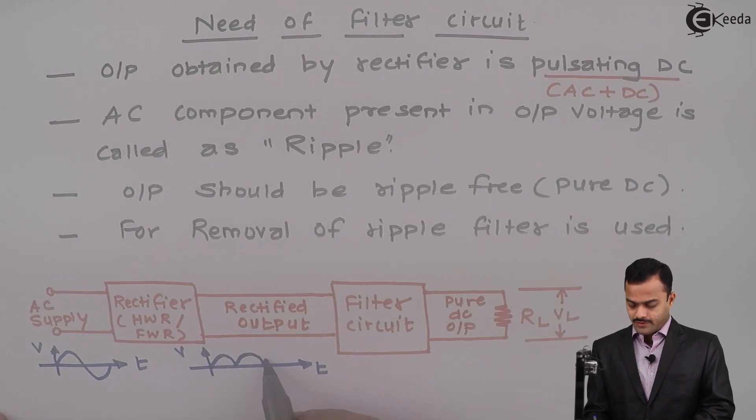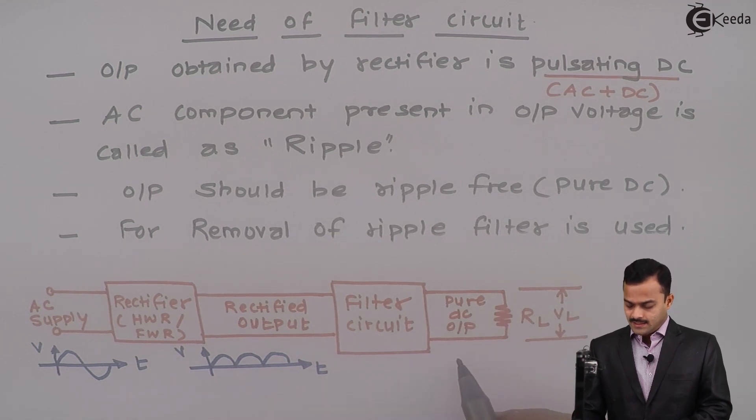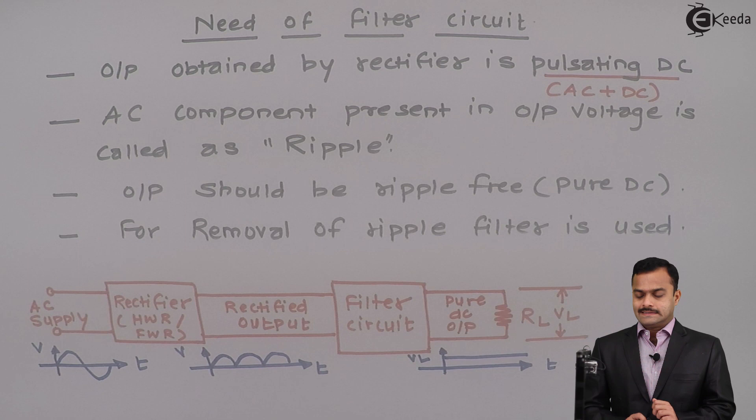You can draw it for half wave also. This is called as a pulsating DC. It has some AC component present in it. And if I pass this to a filter circuit, ultimately voltage across load resistance VL will be pure DC. Now, we have discussed what is the need of filter circuit.